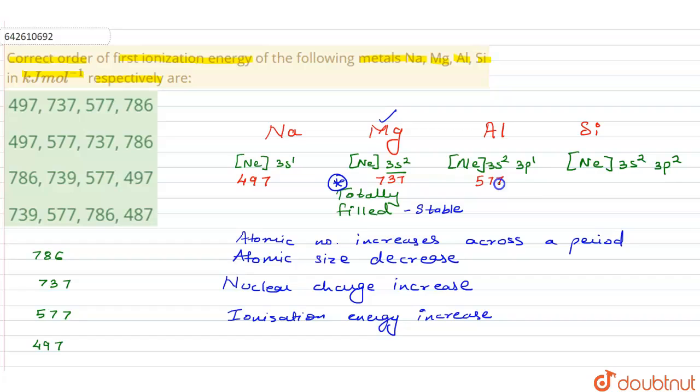The 577 value would be needed by aluminium, and the highest value of all would be needed by silicon, since it is on the extreme right hand side of the periodic table. Hence its ionization energy would be the highest. So this is the order: 497, 737, 577, and 786, and that reflects in our option number one.